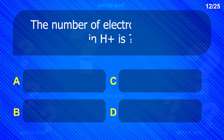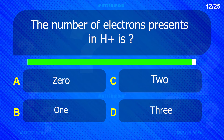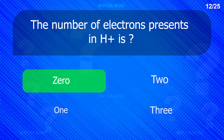The number of electrons present in H+ is: Zero.